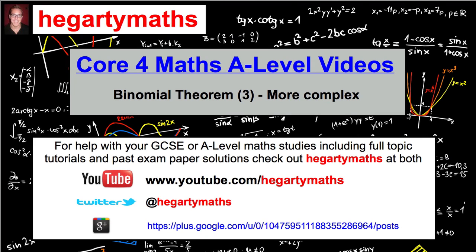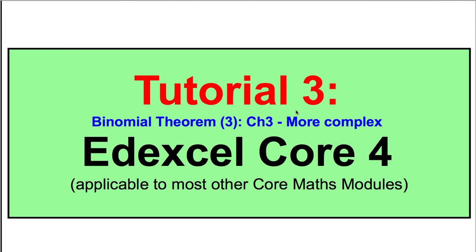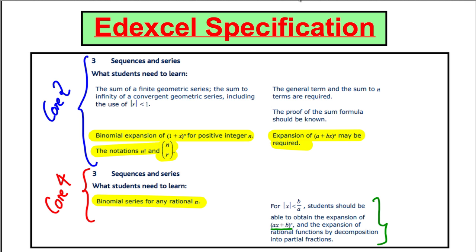Hi there, welcome to another video from Hegarty Maths — an A-level maths video. This is the third one on the binomial theorem, where we deal with slightly more complicated examples. For more help with your maths GCSE or A-level, do see YouTube, Twitter, or Google Plus. This is applicable to most exam boards, and what we've done in the last video is the binomial series for any n.